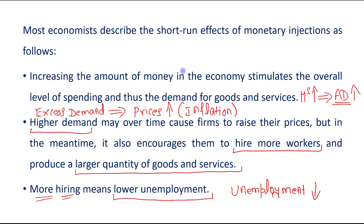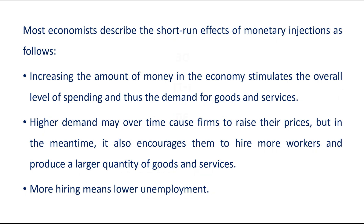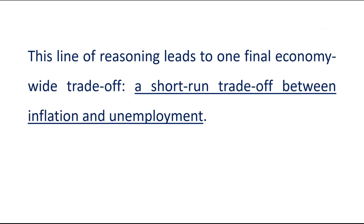So the short-run effects of an increase in money supply in an economy are: an increase in inflation but a decrease in unemployment. This line of reasoning leads to one final economy-wide trade-off — a short-run trade-off between inflation and unemployment.